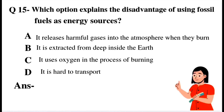Question number 15: Which option explains the disadvantage of using fossil fuels as energy resources? Option A: It releases harmful gases into the atmosphere when they burn. Option B: It is extracted from deep inside the earth. Option C: It uses oxygen in the process of burning. Option D: It is hard to transport. The biggest disadvantage of fossil fuels is that burning them releases harmful gases into the atmosphere, causing pollution. So Option A is the right answer.